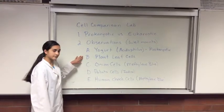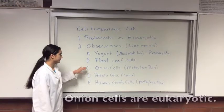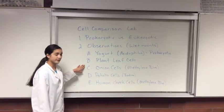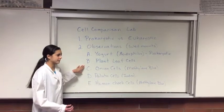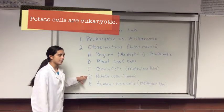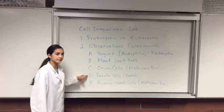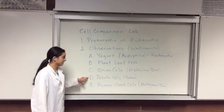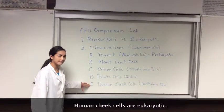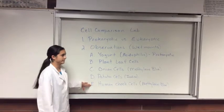Next we'll observe plant leaf cells, and you'll notice chloroplasts in those. Then we'll be observing onion cells, and we'll be dyeing them with methylene blue so you can see the nucleus. Then we'll do potato cells and use iodine to turn them black — you may remember the macromolecule activity where iodine turned things black. And then we'll be doing human cheek cells, and we'll use methylene blue again to dye them.